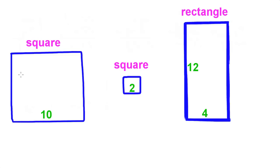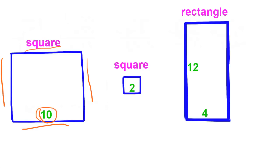By definition of a square, all four sides are exactly the same. So right here, this side says that it is 10 units long — let's say the units are inches. If this is 10 inches long, so is this side, so is this side, and so is this side.